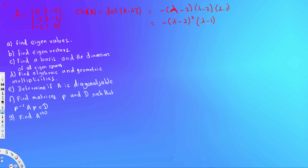Let's do this problem. The question is asking: find eigenvalues, find eigenvectors, find the basis and dimension of the eigenspaces, find algebraic and geometric multiplicities, determine if A is diagonalizable, find matrices P and D such that P inverse AP equals D, and then find A to the power of 100.